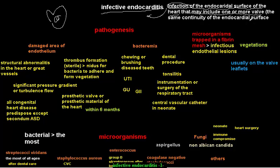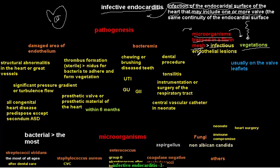In infective endocarditis, we have a pathognomonic lesion called vegetations. Vegetations are microorganisms trapped in a fibrin mesh, sometimes with platelets and other things. The accumulation or clumping of microorganisms constitutes the vegetation — an infectious endothelial lesion. The usual location of vegetations is on the valve leaflets.